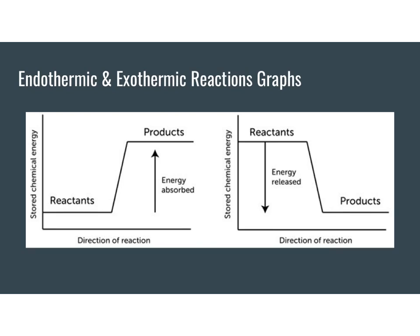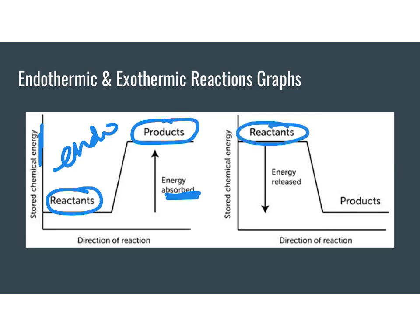Here's how we can represent endothermic and exothermic reactions graphically. We start with energy here on our y-axis, a certain amount of energy for our reactants. If we see an increase in energy, that means energy is absorbed. That means this graph is endothermic. And on the right side, we start with a certain amount of energy for our reactants. And then our products have less energy. That energy then was released. This is exothermic.